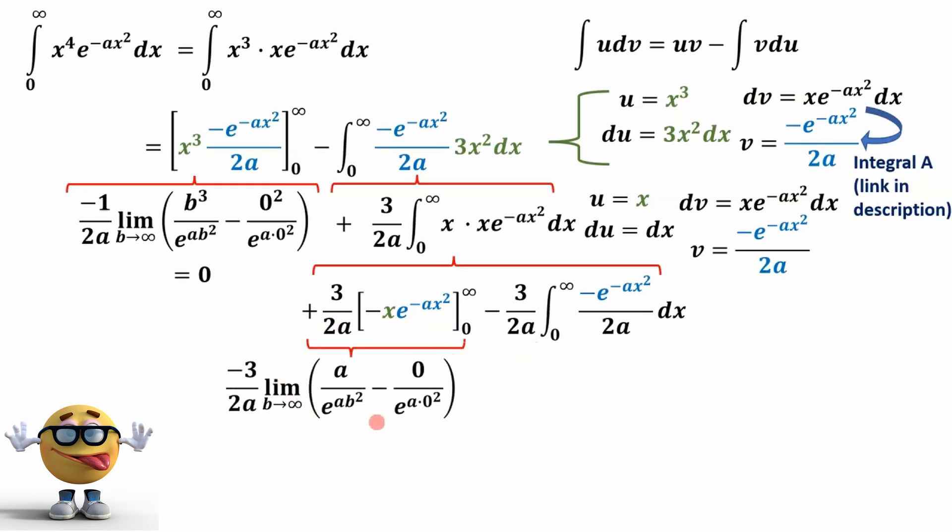Now this right-hand side, this limit looks almost exactly the same as this limit, right? It's basically the same. This term is going to go to zero. And this term is going to go to zero as well as we go to infinity or as we go to zero. So this whole thing goes to zero.